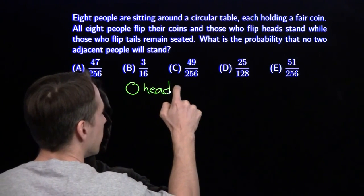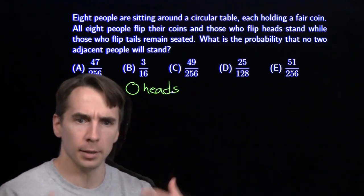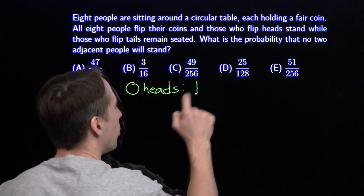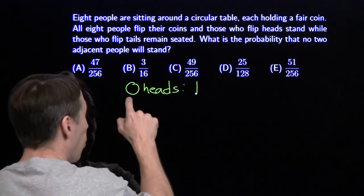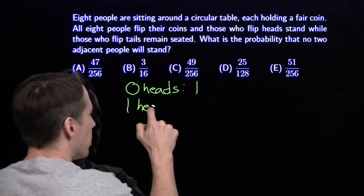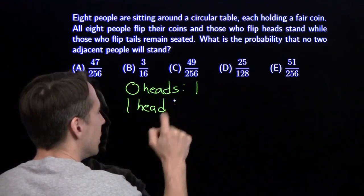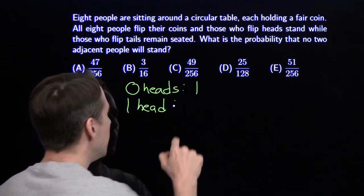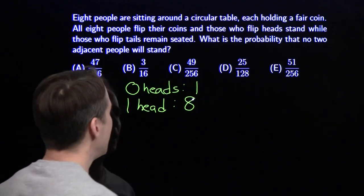Now if there's zero heads, of course, then no two people will be standing next to each other. There's only one way this can happen. There's only one way we can end up with no heads. Now if there's one head, again, if there's one head, there's only one person standing, so there are no two adjacent standing. There are eight possible ways we can get one head because each of the eight people could be the one standing.